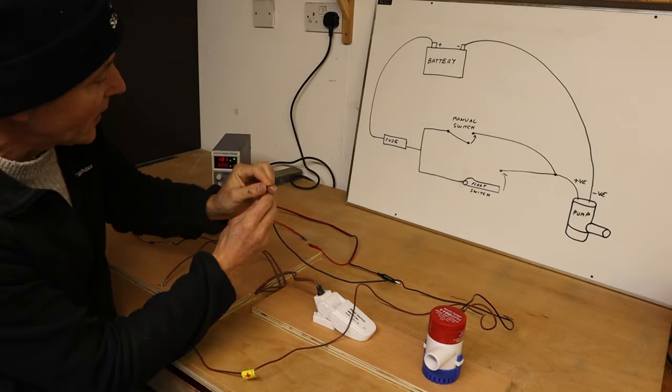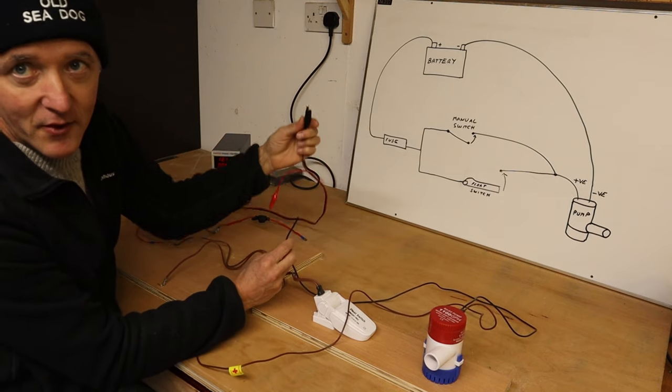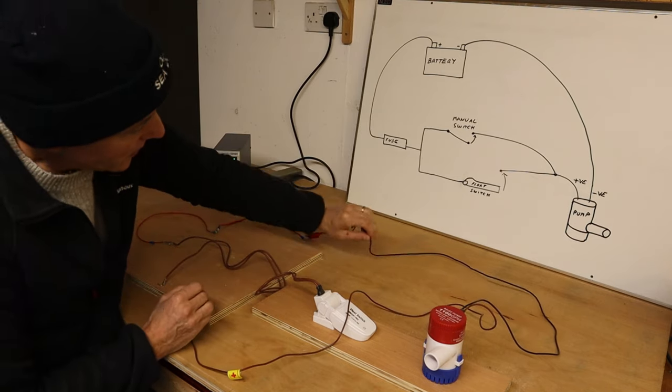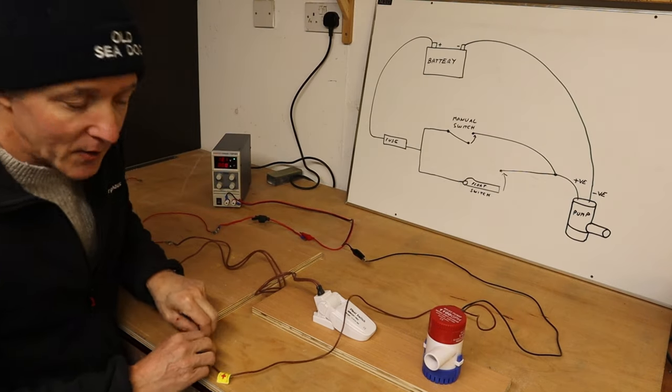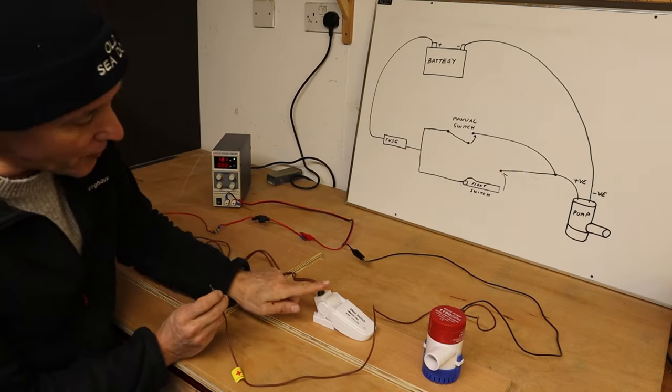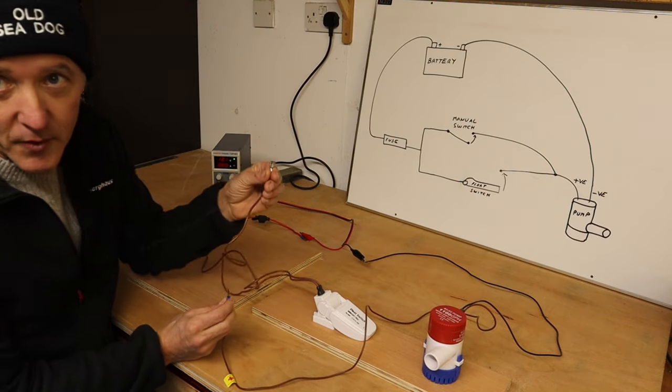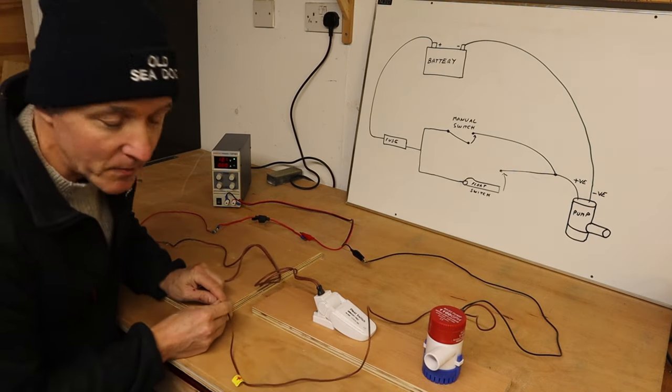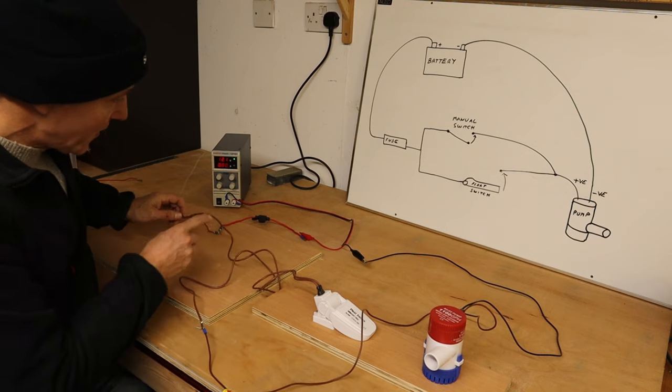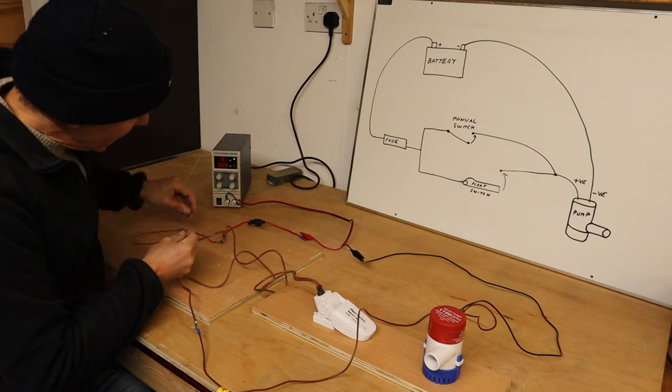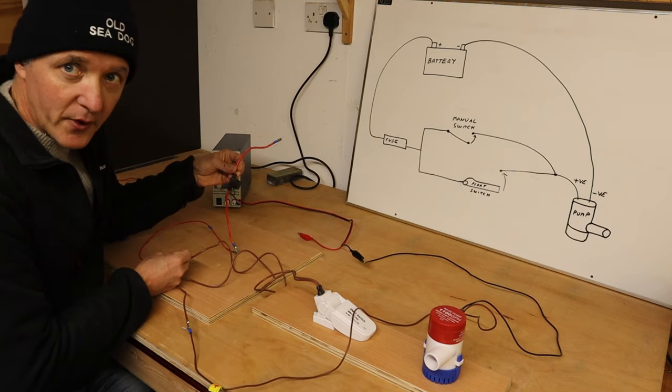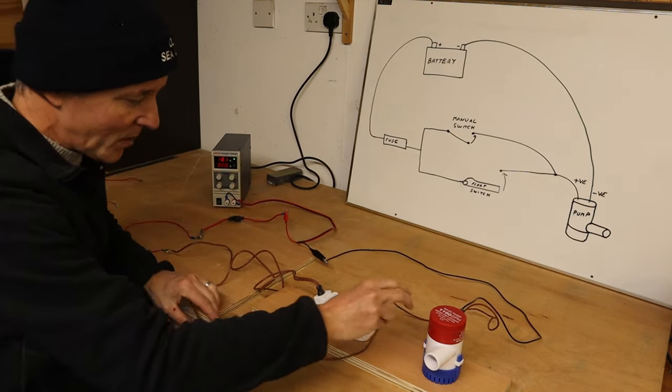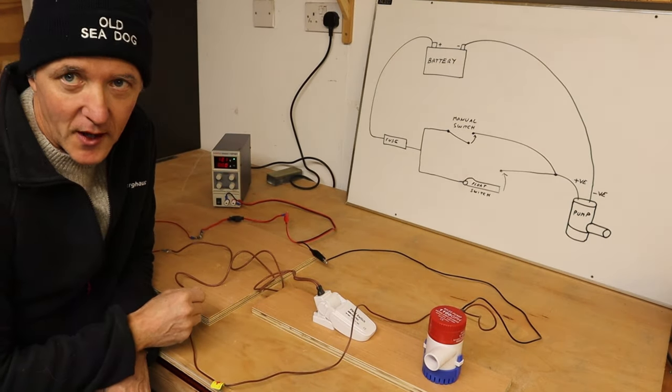The positive we're going to run through the float switch. So one of the arms from the float switch, we are going to connect to the positive of the bilge pump, and then the other wire from the float switch is going to come via our inline fuse to the positive of the power source. So actually, we've built a functioning circuit at this point. If you turn on the float switch, then the pump will operate.